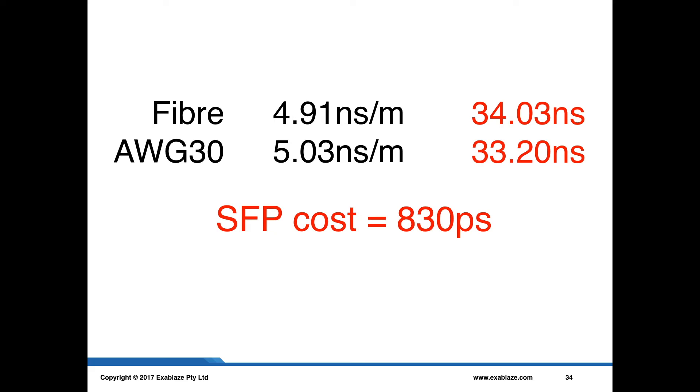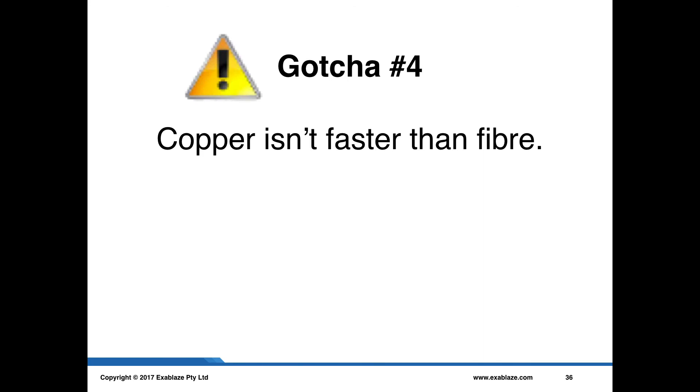The other interesting thing to see is that the copper is actually slower. That's not exactly what we'd expect to see if we were doing this experiment from first principles. So it's interesting to see that there's something else going on there and I'm going to write that up as one of our gotchas of this kind of measurement, which is gotcha number four: Copper isn't faster than fiber.